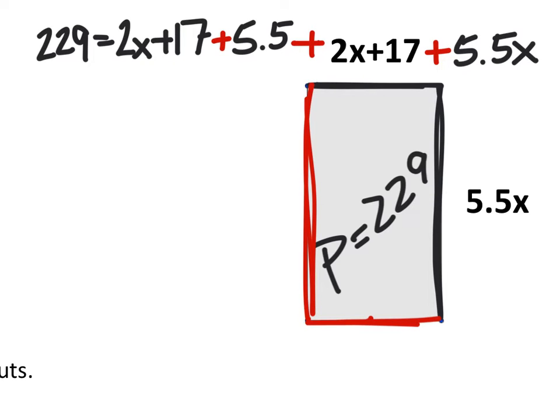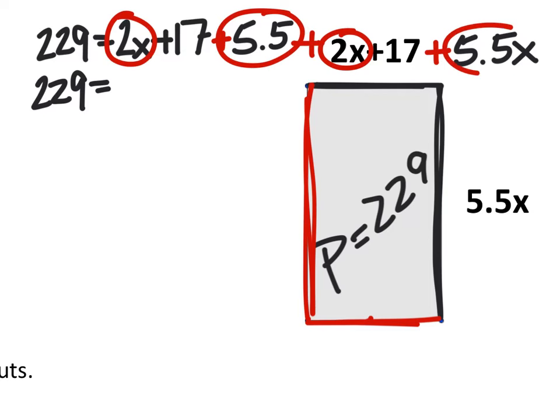Alright, so from here we're just going to combine like terms on both sides of the equal sign. There's nothing to combine with that 229. But I've got 2x's here, 5.5x's there, another 2x's here, and a 5.5x there.